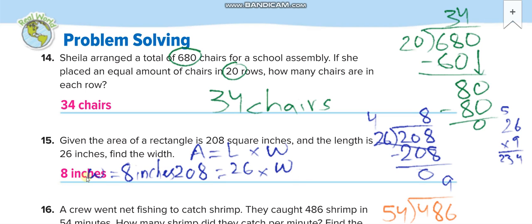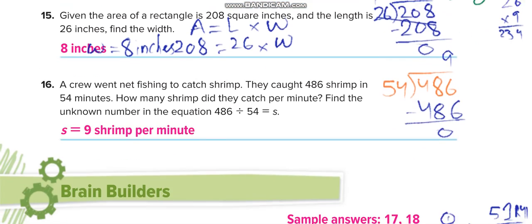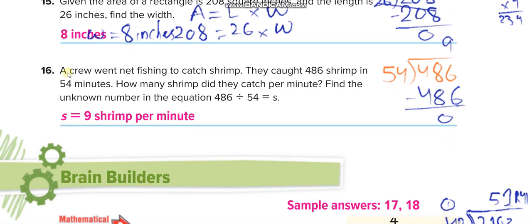A crew went net fishing to catch shrimp. They caught 486 shrimp in 54 minutes. When you divide 486 by 54, it's 9, so 9 shrimp per minute.